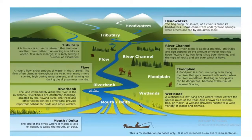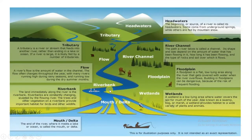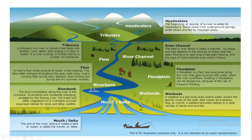The first part is the upper region where the river water falls — the source. Then come the tributaries, which are places where a river or stream feeds into another river rather than ending in a lake or ocean. If a river is large, it is likely fed by a number of tributaries. Marshy places are also seen. The last part is the estuary.